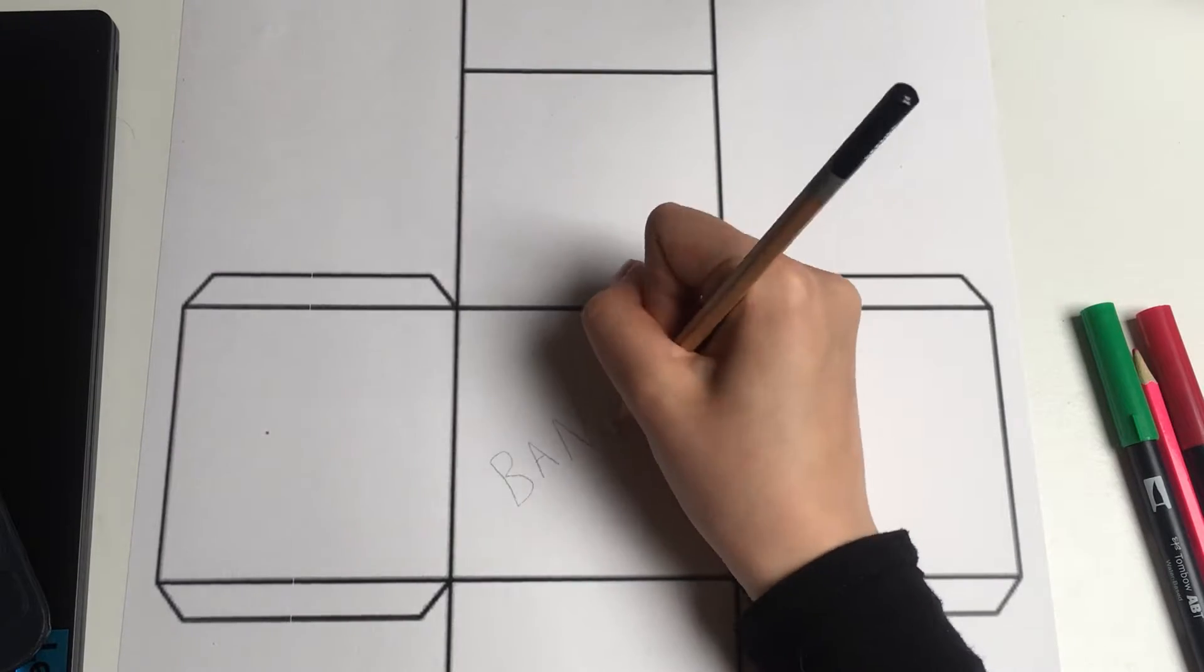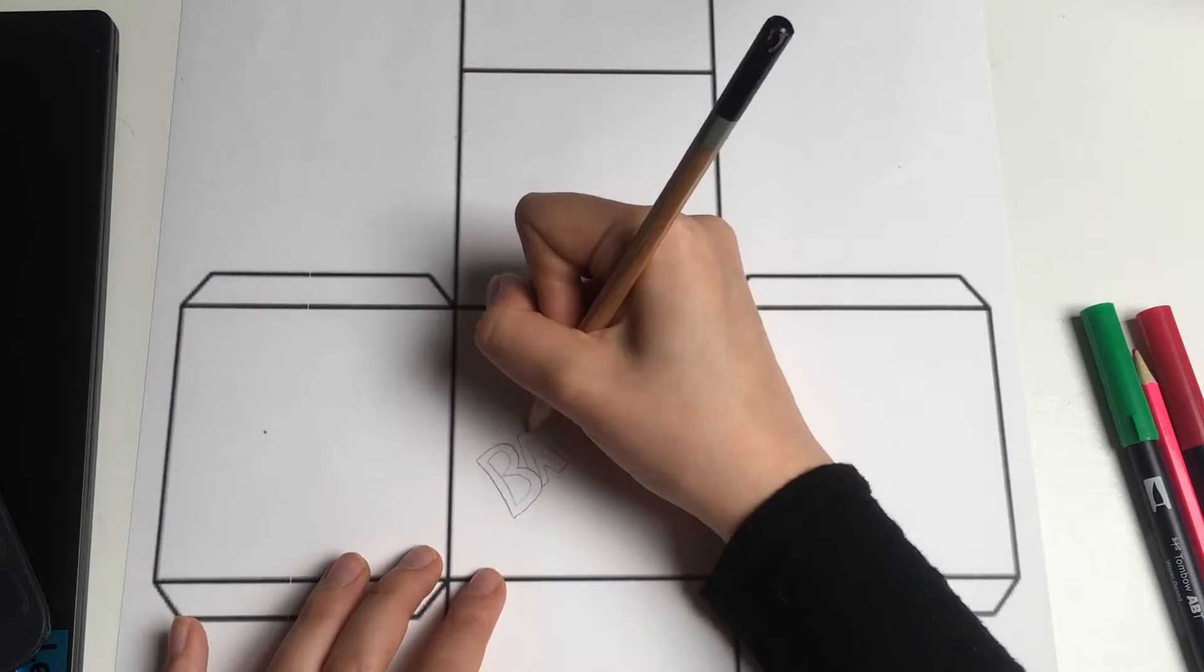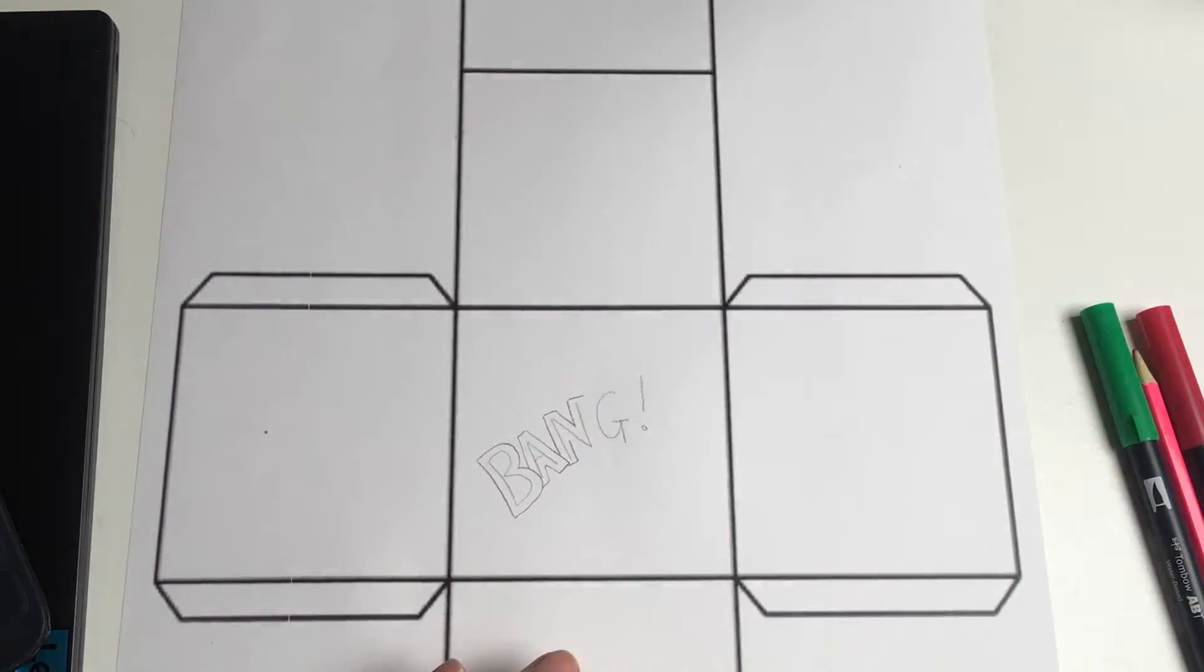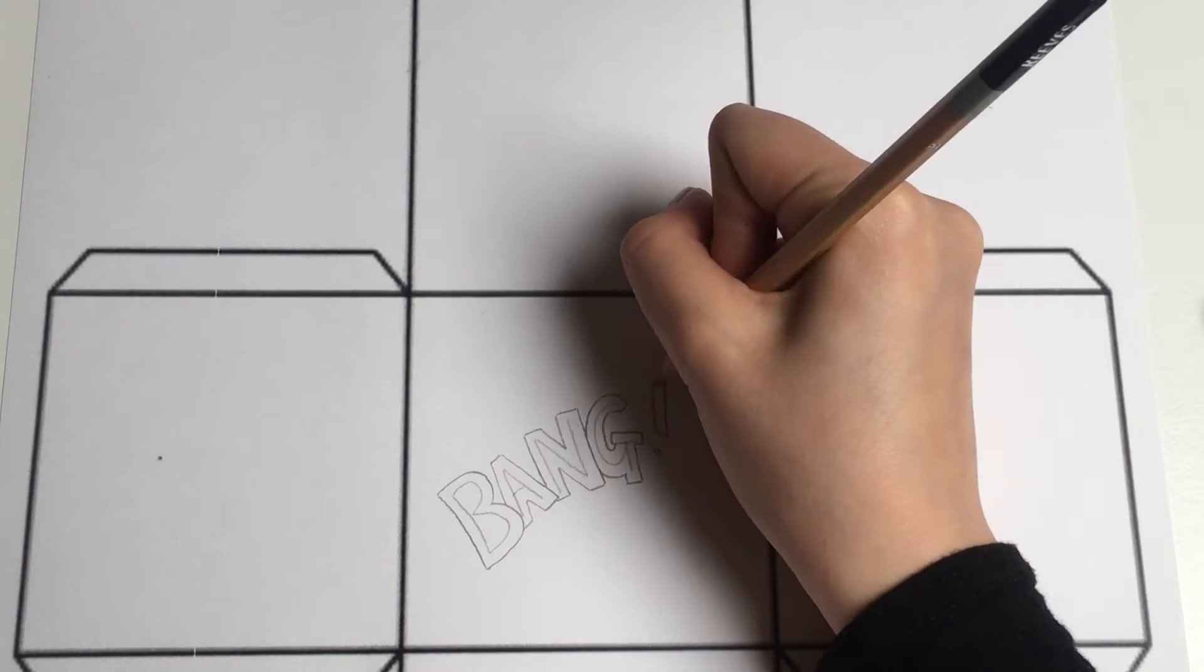So what I'm doing first with a pencil is writing the word BANG in the middle of the square, and then I'm adding an outline around it. If you can see closely, it's almost like making the font look a bit more block.